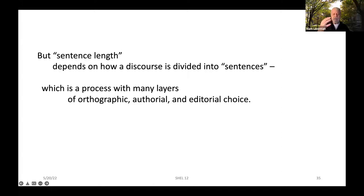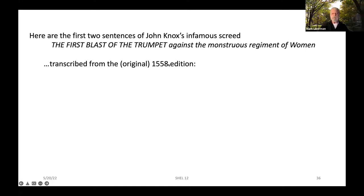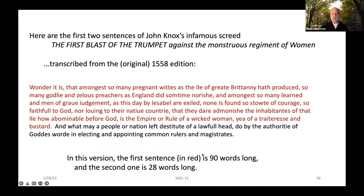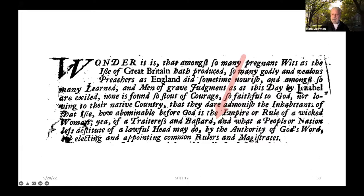But sentence length depends on how a discourse is divided into sentences, and that's a process with many layers of orthographic, authorial, and editorial choice — and this has been true from the beginning of printing. Here are the first two sentences of John Knox's infamous screed, 'The First Blast of the Trumpet Against the Monstrous Regiment of Women,' transcribed from the original 1558 edition. In this version, the first sentence in red is 90 words long and the second is 28 words long. In a 17th-century edition published about a century later, those two sentences are combined with a comma in place of the period, making one sentence of 118 words — that is, a period in the original publication was changed to a comma by some editor or typographer.